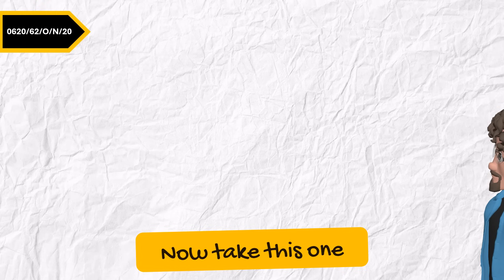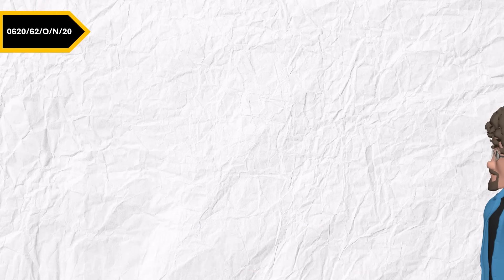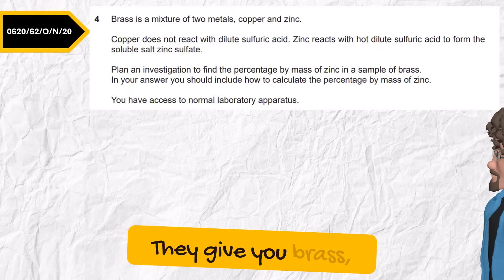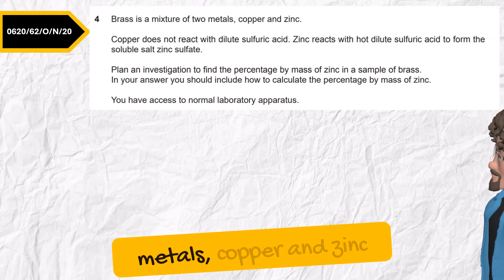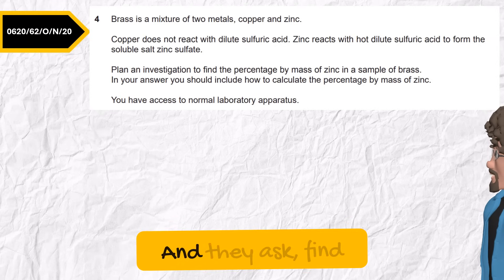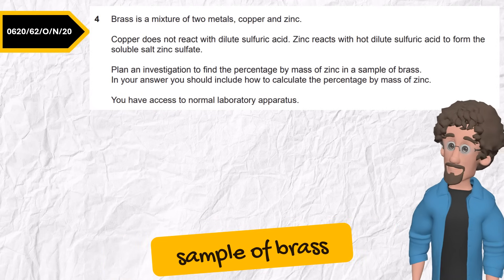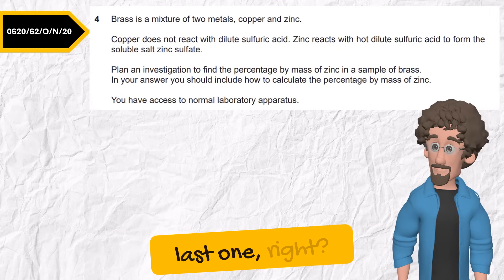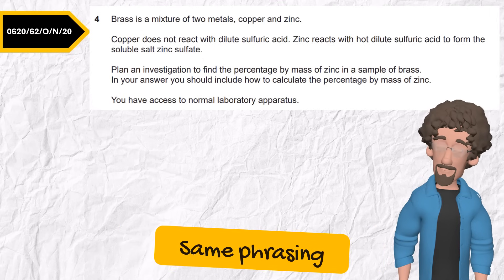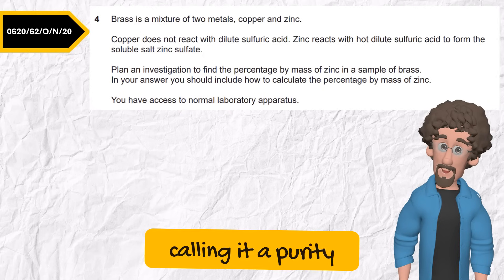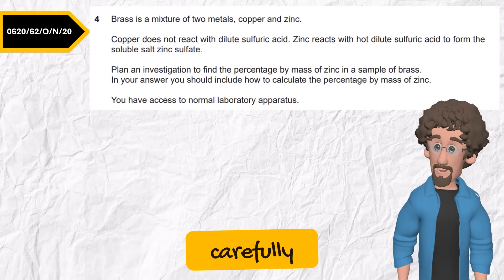Now take this one. October-November 2020, variant 2. They give you brass, a mixture of two metals, copper and zinc. And they ask, find the percentage by mass of zinc in a sample of brass. Sounds similar to the last one, right? Same phrasing. So before rushing to the wrong category and calling it a purity test, read the question carefully.